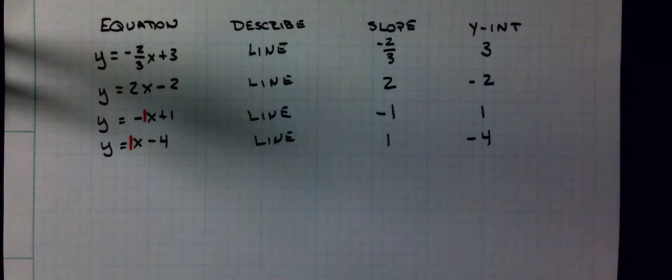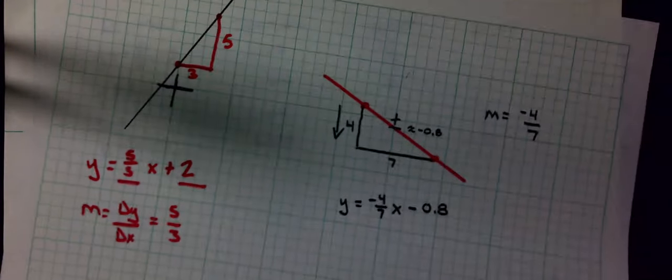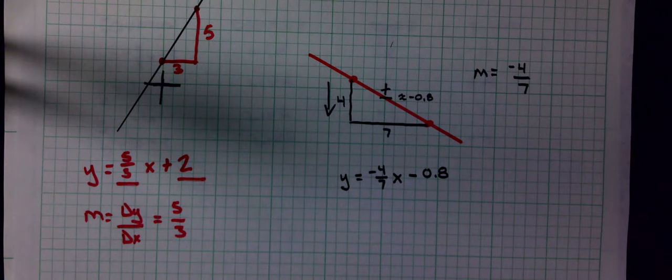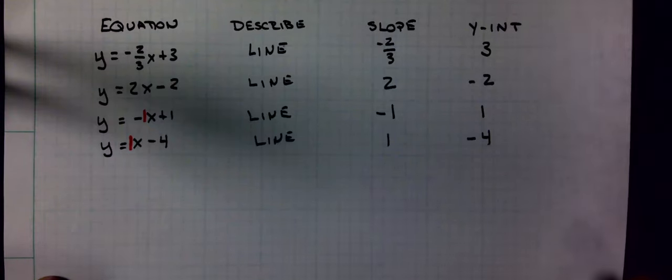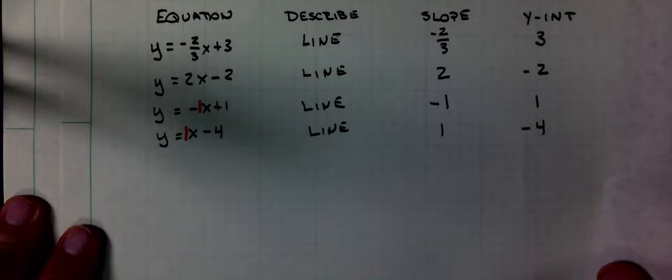So those are the questions they can ask you. They can also ask you, like these previous questions I gave you, here's a graph of a line, give me its equation. I've already showed you those. And the last type of question we can have here is, I can be given the equation and have to graph the line. So I'm going to take these four equations that we had before and we're going to graph them. The first equation I want to graph is y equals negative two-thirds x plus 3.